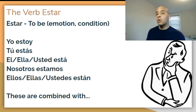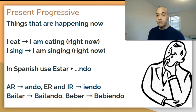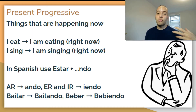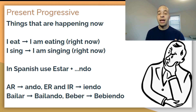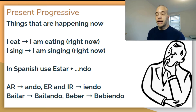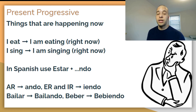But for now let's go over the present participles. The present progressive is talking about things that are happening right now. So let's take a look at a couple examples: 'I eat' becomes 'I am eating,' and 'I sing' becomes 'I am singing.' You can see that the first verb is a general statement and the second is a phrase that's telling you what's going on right now.